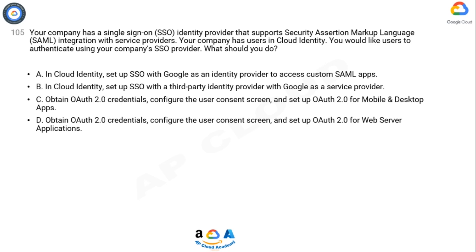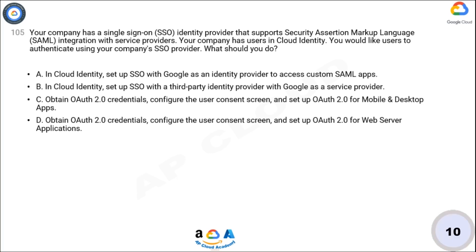A: In Cloud Identity, set up SSO with Google as an identity provider to access custom SAML apps. B: In Cloud Identity, set up SSO with a third-party identity provider with Google as a service provider. C: Obtain OAuth 2.0 credentials, configure the user consent screen, and set up OAuth 2.0 for mobile and desktop apps. D: Obtain OAuth 2.0 credentials, configure the user consent screen, and set up OAuth 2.0 for web server applications.